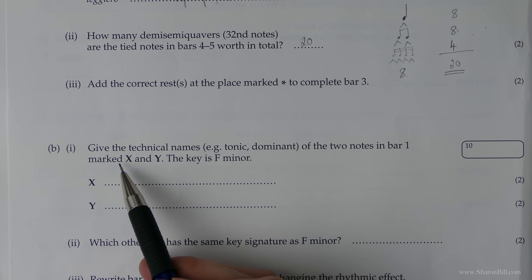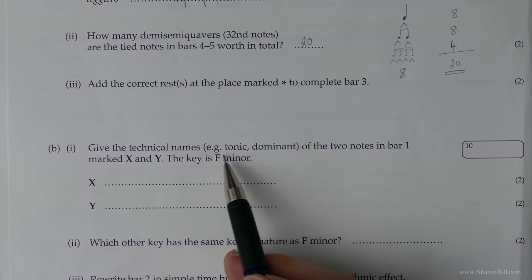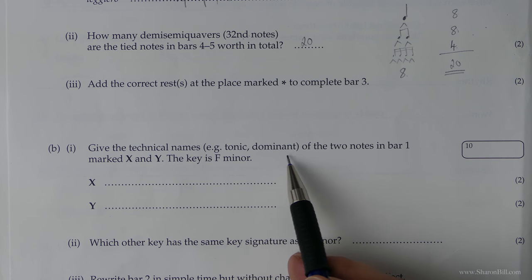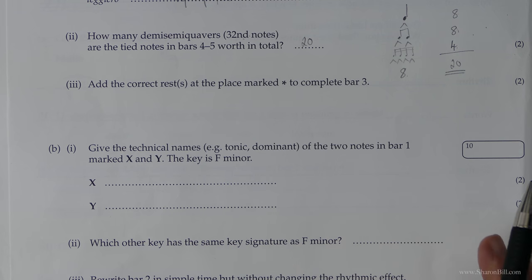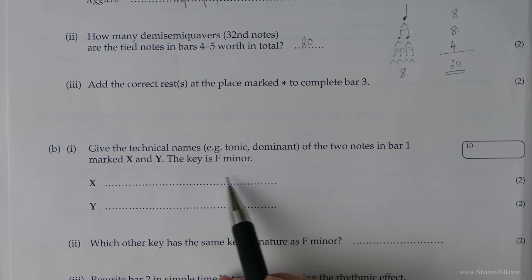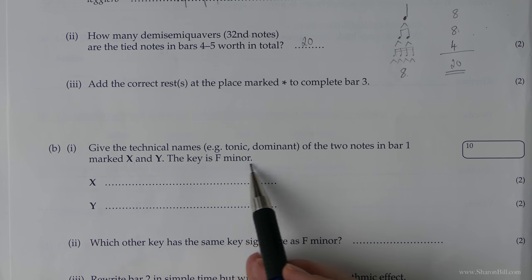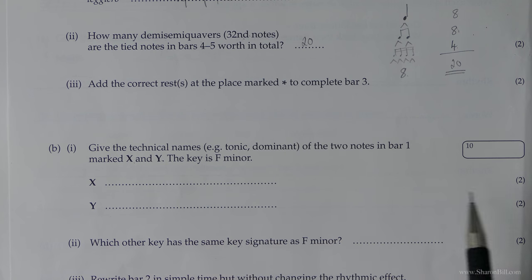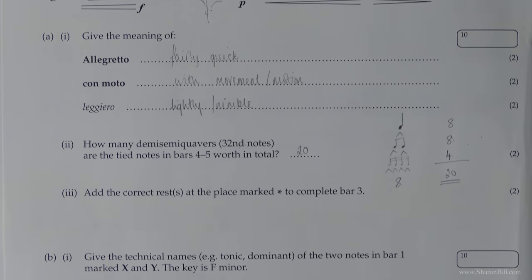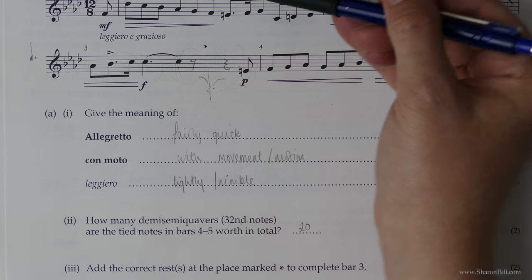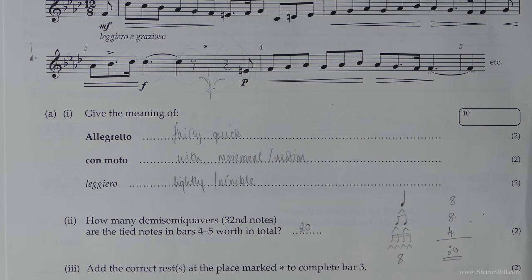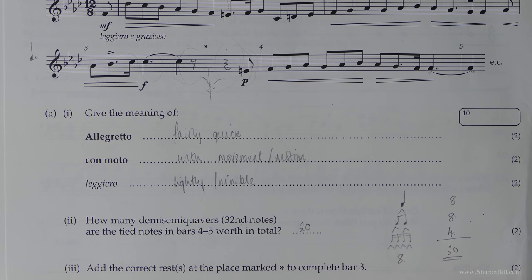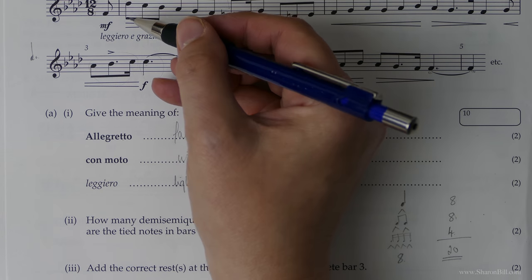Next one. Give the technical names. So we're looking at words like tonic and dominant of the two notes in bar one marked with an X and a Y. Now they've done the main bit of thinking for us. They've told us that the key is F minor. So we need to find the intervals of these notes here and then give them their technical name.